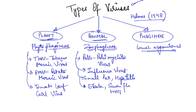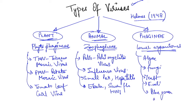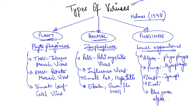Viruses which occur in lower organisms have hosts like algae, fungi, yeast, E. coli, and blue-green algae, and each is given a different name. Algae viruses are called phycophages, fungi viruses are mycophages, yeast viruses are zymophages, E. coli viruses are coliphages, and blue-green algae viruses are also referred to distinctly.